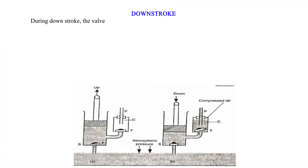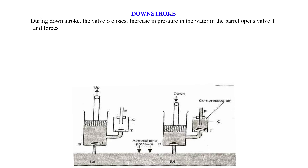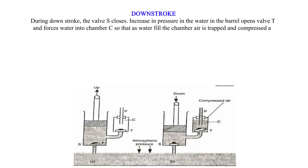During downstroke, the valve S closes. Increase in pressure in the water in the barrel opens valve T and forces water into chamber C, so that as water fills the chamber, air is trapped and compressed at the upper part.